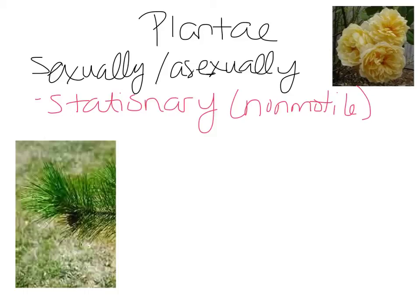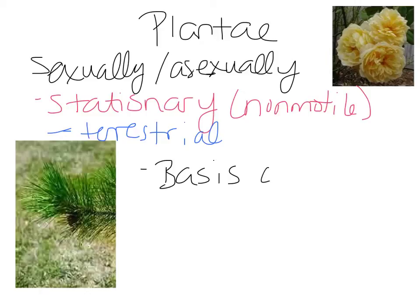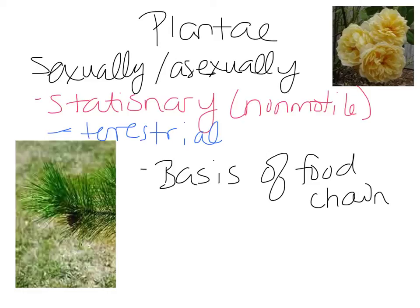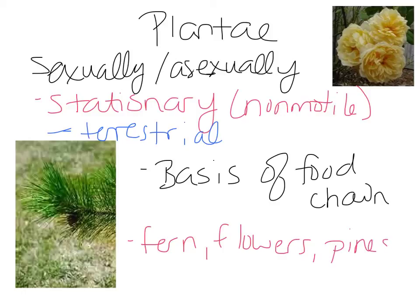Plants are mostly terrestrial — most live on land. Quote-unquote plants that are in water are actually protists — they're algae. Plants are the basis of the food chain. Without our producers, without our plants, there's no energy available for herbivores; herbivores die out, and then there's nothing for the carnivores. A wide variety of examples ranges from ferns to flowering plants like roses, tulips, and daffodils, to pine trees, oak trees, and grass. Trees are not their own separate kingdom — they fall under the plant category.